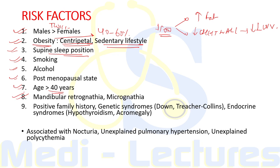Additional risk factors include supine sleep position, smoking, alcohol, post-menopausal state, age over 40 years, craniofacial factors like mandibular retrognathia and micrognathia, positive family history, genetic syndromes like Down syndrome and Treacher Collins syndrome, and endocrine syndromes like hypothyroidism and acromegaly. The most important risk factor remains obesity.